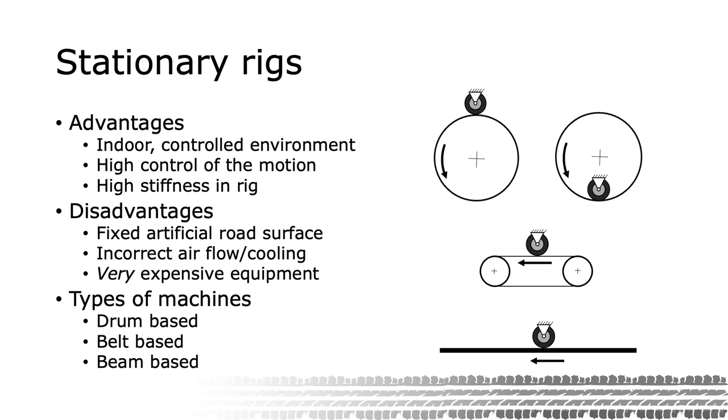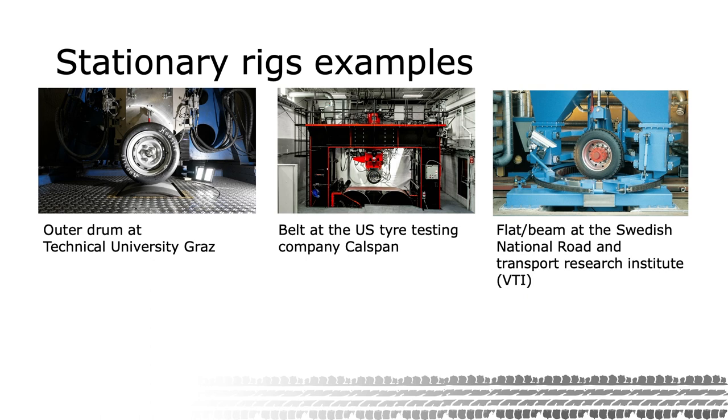The final category of tire measurement machines can be called beam-based. Here, the surface is made of a straight beam that is pushed underneath the test wheel. While this arrangement can be made much stiffer than the belt-based and with a flat contact patch, it is limited in speed and distance of measurement. The availability of these types of machines is very limited and typically used in research applications where the limited travel speed is not an issue.